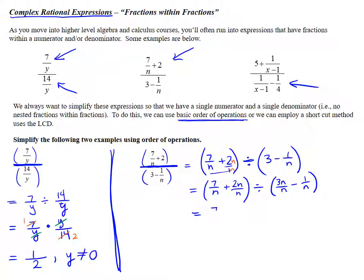So I have 7 plus 2n over n divided by 3n minus 1 over n. To divide fractions, we now can flip and multiply. So 7 plus 2n over n times n over 3n minus 1. You'll notice here we have an n that's common. We can cancel it.